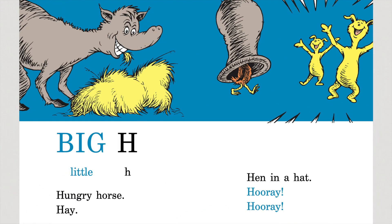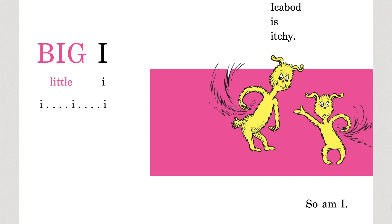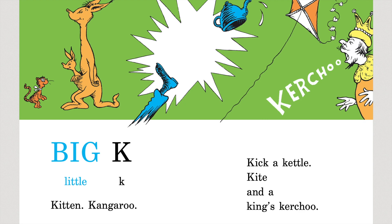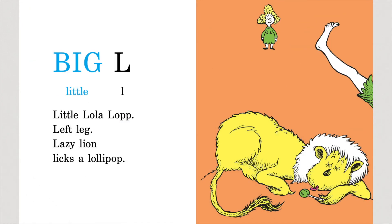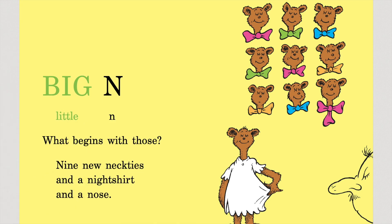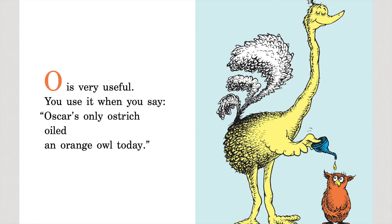Big H, little H — hungry horse, hey. Hen in a hat, hooray, hooray. Big I, little I — I, I, I. Ichabod is itchy, so am I. Big J, little J — what begins with J? Jerry Jordan's jelly jar and jam begin that way. Big K, little K — kitten kangaroo. Kick a kettle, kite, and a king's ker-choo. Big L, little L — little Lola Lot. Left leg, lazy lion licks a lollipop. Big M, little M — many mumbling mice are making midnight music in the moonlight. Mighty nice. Big N, little N — what begins with those? Nine new neckties and a nightshirt and a nose. O is very useful. You use it when you say: Oscar's only ostrich oiled an orange owl today.